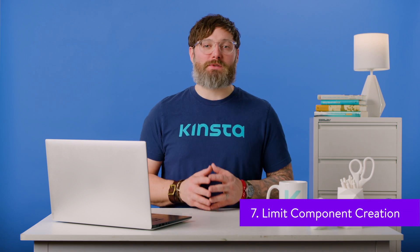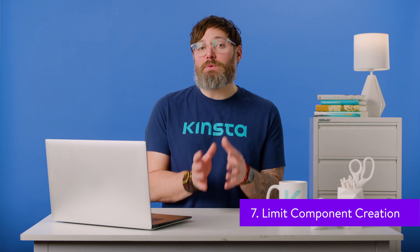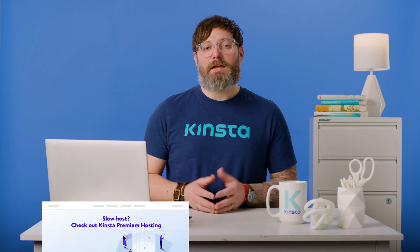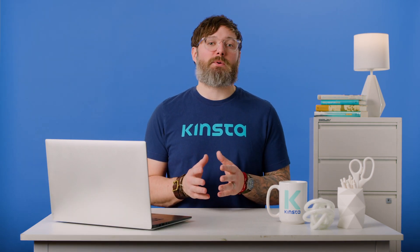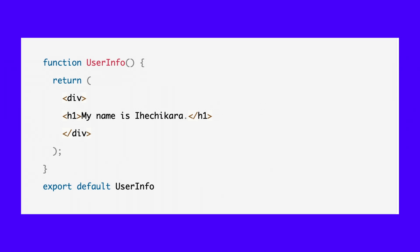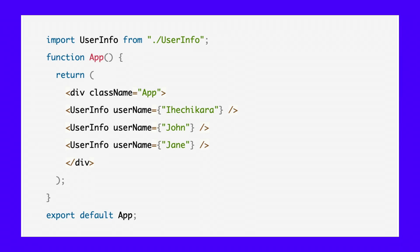One of the core features of React is code reusability. You can create a component and reuse its logic as many times as possible without rewriting that logic. With that in mind, you should always limit the number of components you create. Not doing so bloats the file structure with unnecessary files. The component used here shows the name of a user. If we were to create a different file for every user, we'd eventually have an unreasonable number of files. To make our component reusable, we make use of props. After that, we can import this component and use it as many times as we want. Now we have three different instances of the user info component coming from the logic created in one file instead of having three separate files for each user.